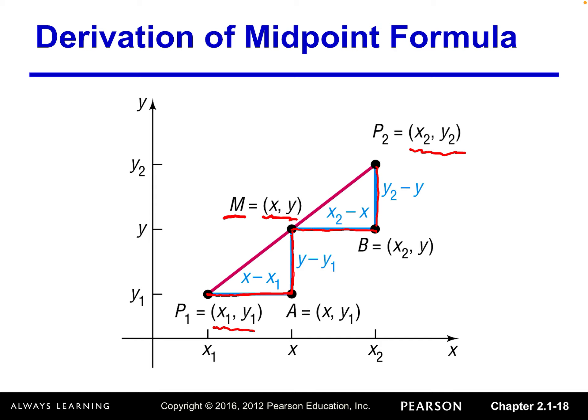Draw the horizontal line from the midpoint, draw the vertical line from the endpoint P2. And then we form these two right triangles.